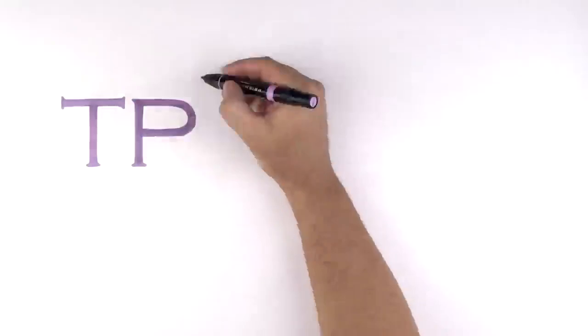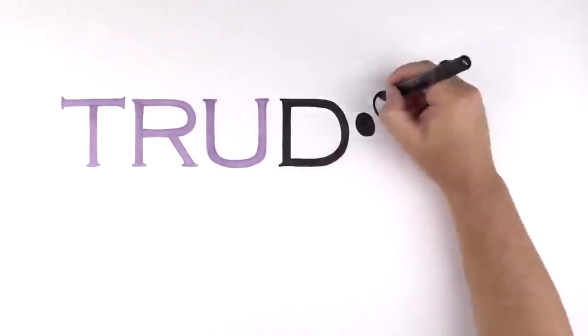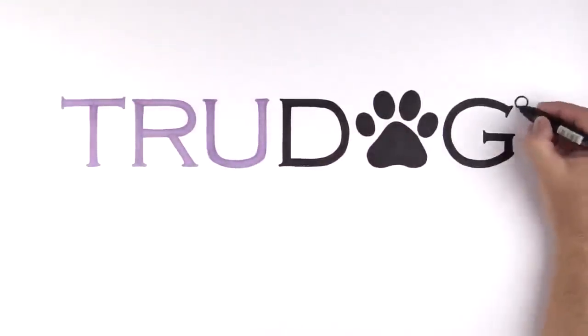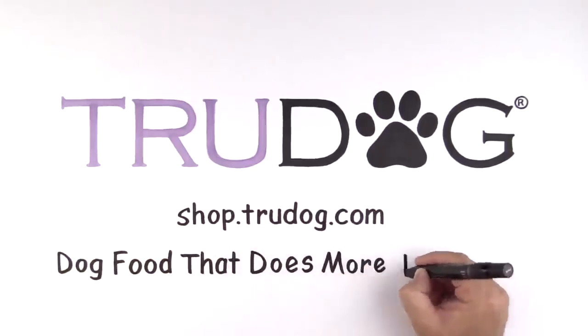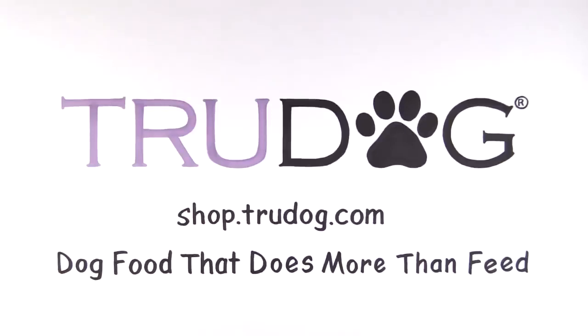True Pet freeze-dried raw dog food delivers convenient, delicious options for your dog made with farm-fresh meat straight from the source. True Pet is the kind of food that feeds your dog's health.